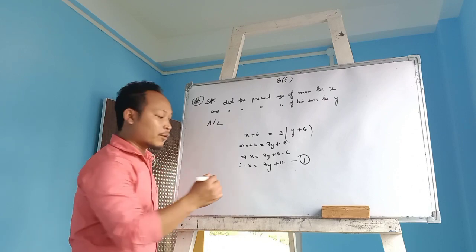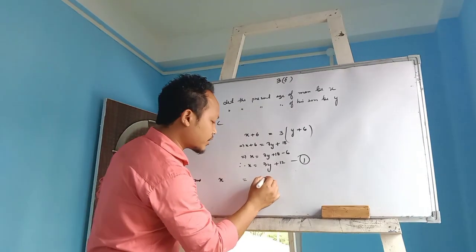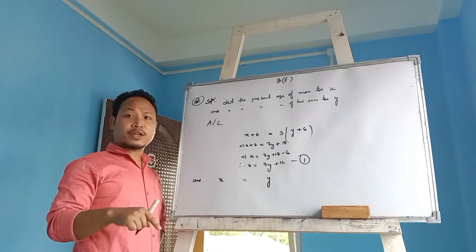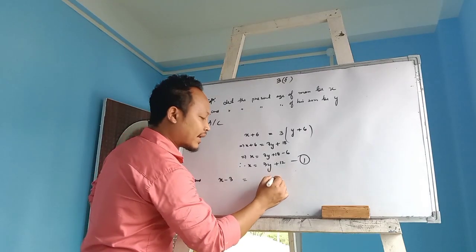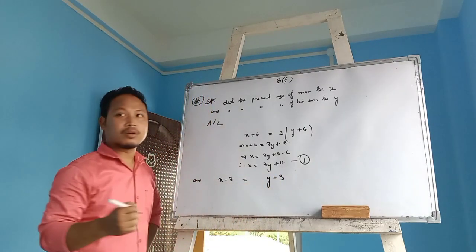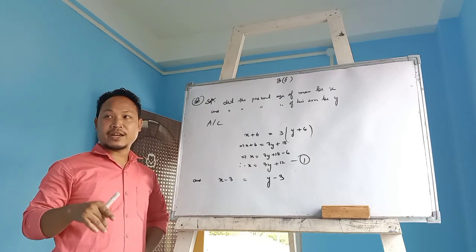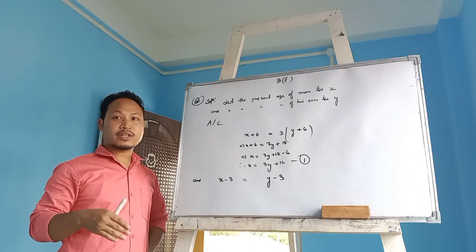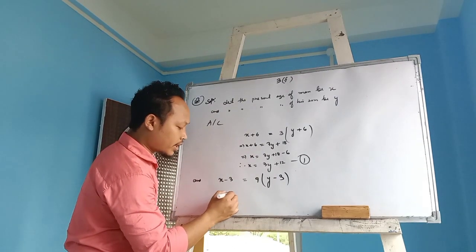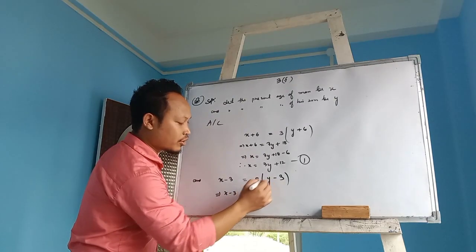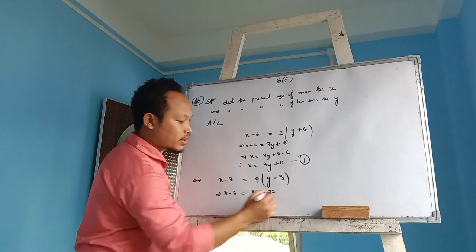So always we have to write father on left side and son on right side. How many years ago? 3 years. So minus 3 for father, minus 3 for son. How many times? 9 times. So now I will say x minus 3 is equal to 9 times y, 9y minus 27.